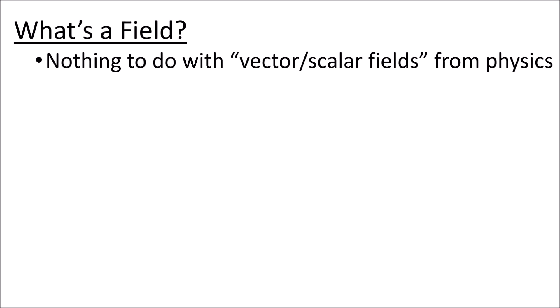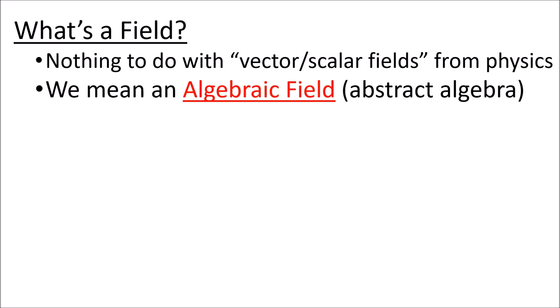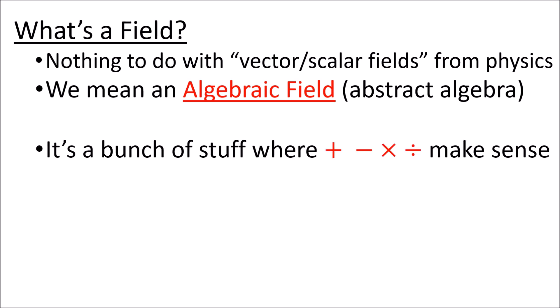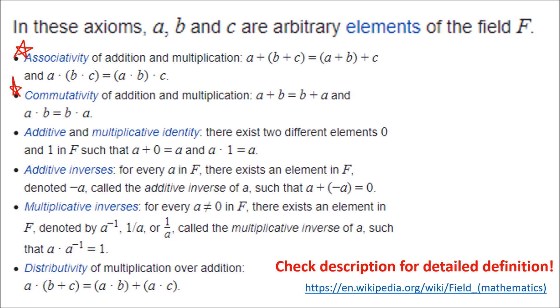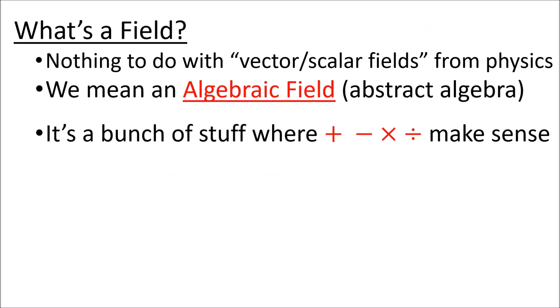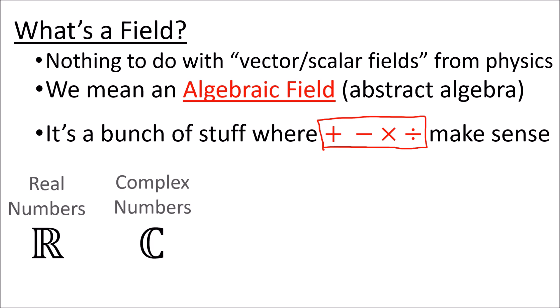You might be asking, what's a field? When I say a field, this has nothing to do with vector fields or scalar fields that you might see in a physics class. Instead, I mean an algebraic field, which is a definition that comes from abstract algebra. Roughly speaking, a field is a bunch of stuff where the operations of addition, subtraction, multiplication, and division make sense. There's a more technical and formal definition of a field which lists properties like associativity and commutativity, but I'm not going to get into these details — you can check the description for links to this formal definition if you want. The real numbers, complex numbers, and rational numbers are all examples of fields.